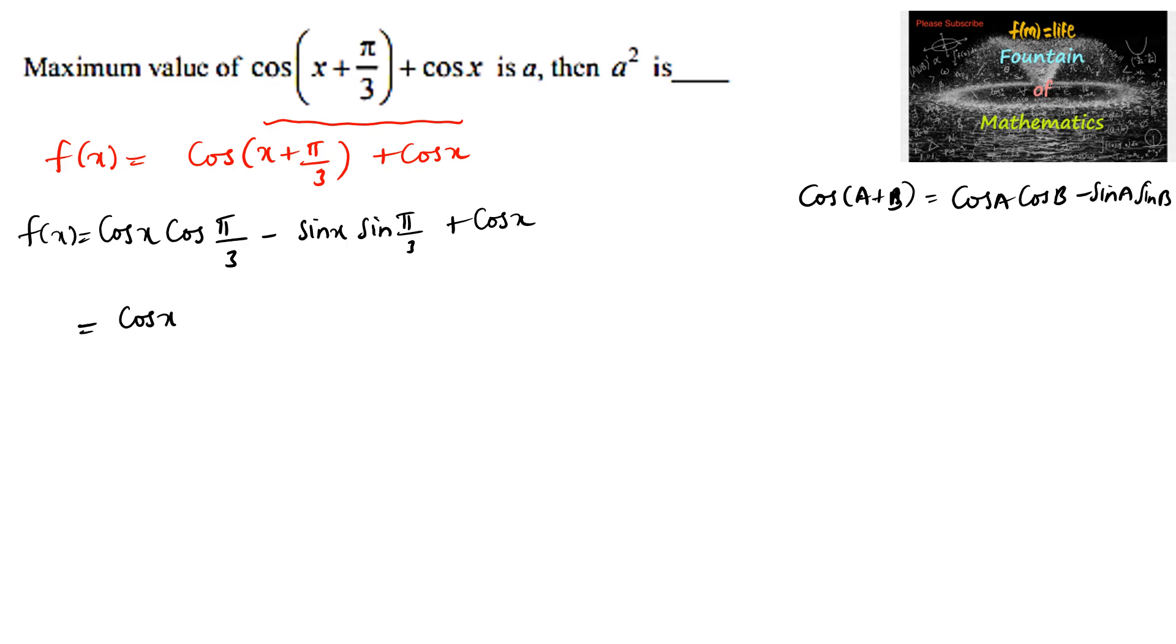Which is equal to cos(x) times cos(60°) is 1/2, minus sin(x) times sin(60°) is √3/2, plus cos(x). So 1/2 plus 1 is 3/2, giving us (3/2)cos(x) - (√3/2)sin(x).